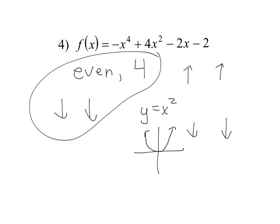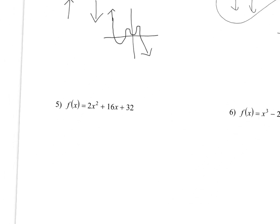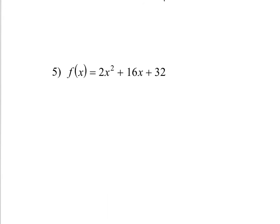Next one — this one actually is a parabola. The highest power is two, so it's even. It's an even function, the degree is two, so it has a maximum of two zeros. And it goes up-up. Why? Because it's even and the leading number is positive. The number connected to the highest powered term is positive — even positive equals up-up.